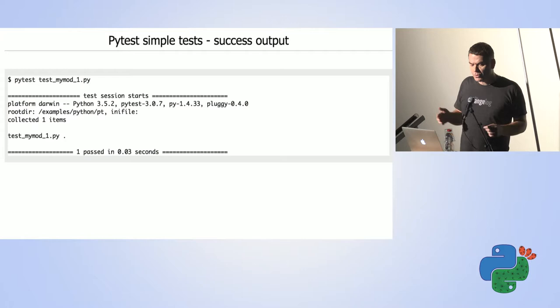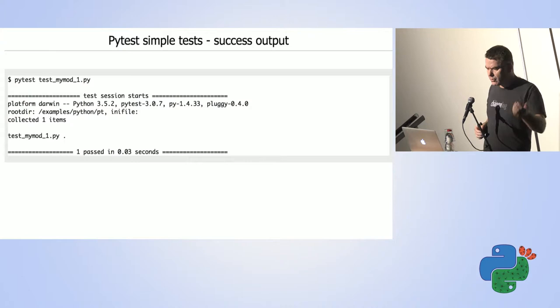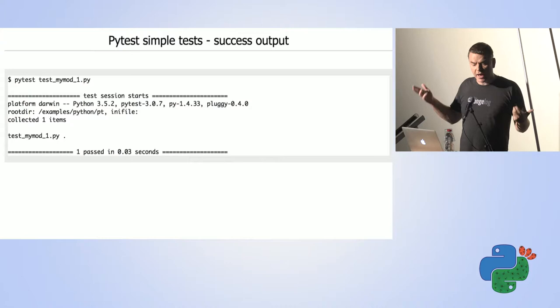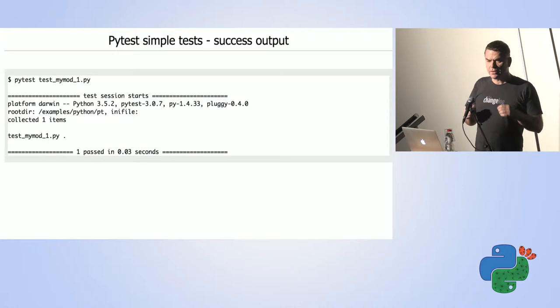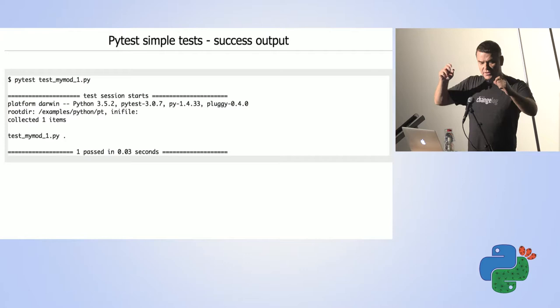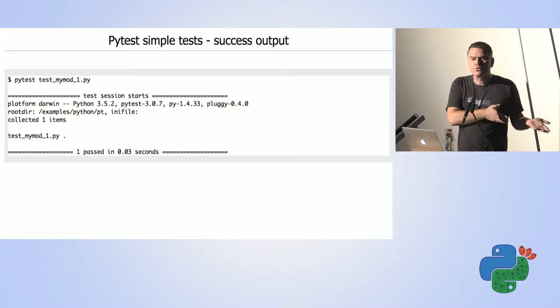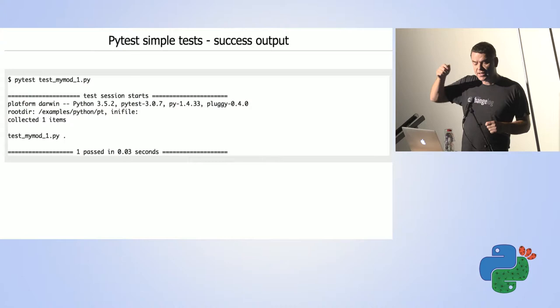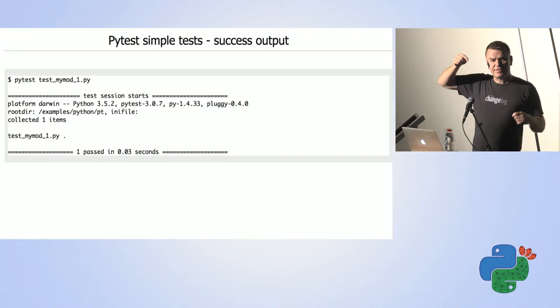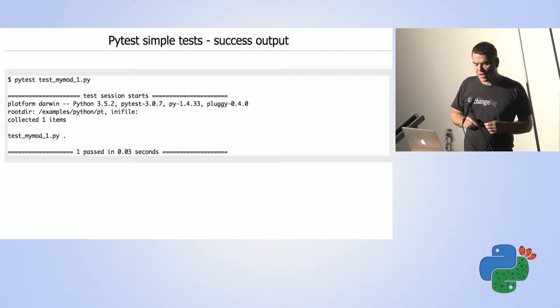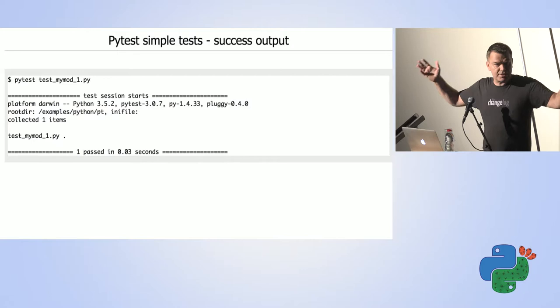In the report you can see some generic data: the platform (Mac OS), the Python version, the root directory, and the more interesting part. 'Collected 1 item' because there was one test function. The number of asserts is not relevant — you can have as many as you want and it's still one test. Below that you see the list of files. We had one test file, and after that there is a dot, representing the single test function that passed. At the bottom is a summary. We have an application, we have a test, it works — we can deploy it.